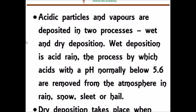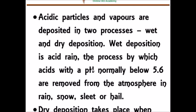Now let's discuss wet deposition and dry deposition in more detail. Acid particles and vapors are deposited in two processes: wet deposition and dry deposition. Wet deposition is a process by which acids with a pH below 5.6 are removed from the atmosphere in the form of rain, snow, sleet, or hail.